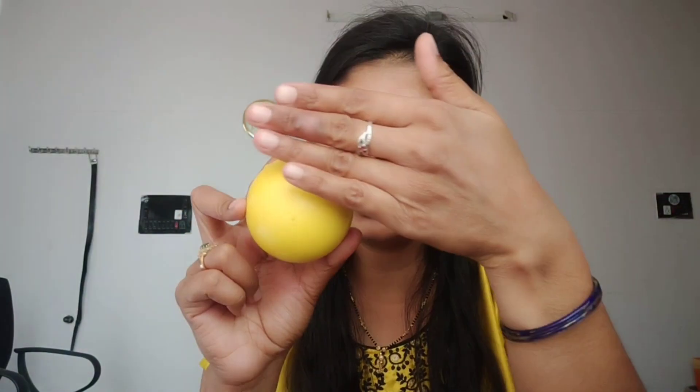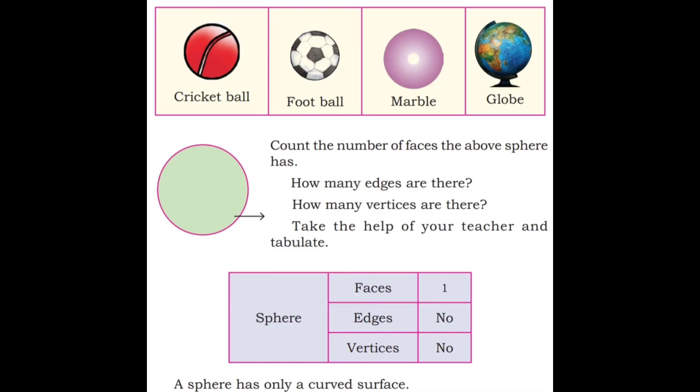The last solid shape is sphere. This ball is in a round shape. Its face looks like a circle, so it has one face. It doesn't have any edges and vertices. Examples: cricket ball, football, marble, globe — these are in the sphere shape. So a sphere has one face, no edges, and no vertices. A sphere has only a curved surface.